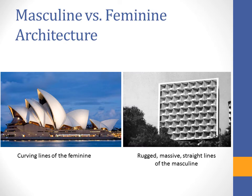As an example of the difference between masculine and feminine architecture: on the left-hand side, the Sydney Opera House in Australia, with its curving, feminine lines — almost like bra cups — which represent the epitome of art and culture. On the right-hand side, the rugged, massive straight lines of masculine architecture seen in old Soviet Union and Eastern Europe, meant to demonstrate power and dominance. There are a lot of nonverbal messages being sent from these particular architectural styles.